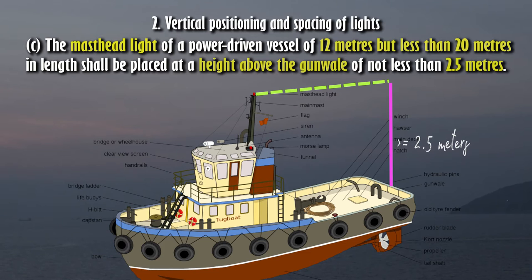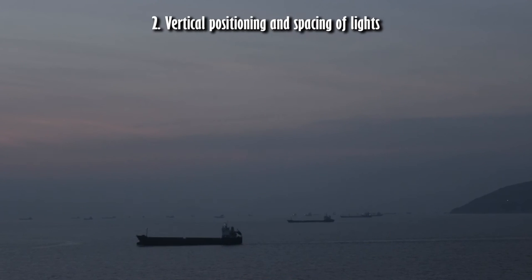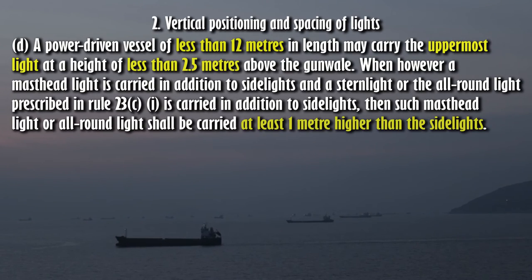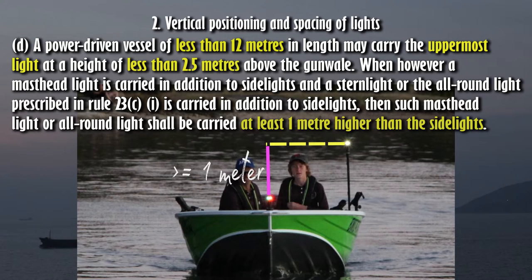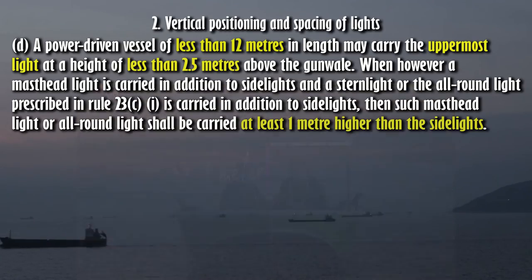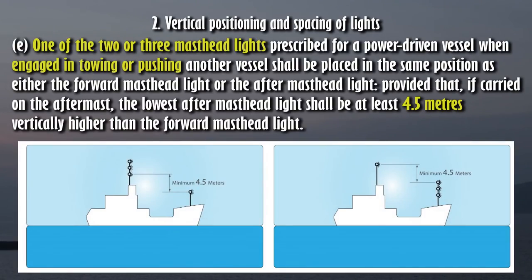(D) A power-driven vessel of less than 12 meters in length may carry the uppermost light at a height of less than 2.5 meters above the gunwale. (5) When a masthead light is carried in addition to side lights and a stern light, or the all-round light prescribed in Rule 23 is carried in addition to side lights, then such masthead light or all-round light shall be carried at least 1 meter higher than the side lights. (E) One of the two or three masthead lights prescribed for a power-driven vessel when engaged in towing or pushing another vessel shall be placed in the same position as either the forward masthead light or the after masthead light; provided that, if carried on the after mast, the lowest after masthead light shall be at least 4.5 meters vertically higher than the forward masthead light.